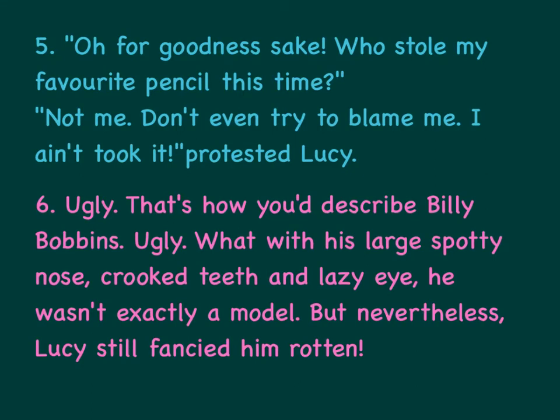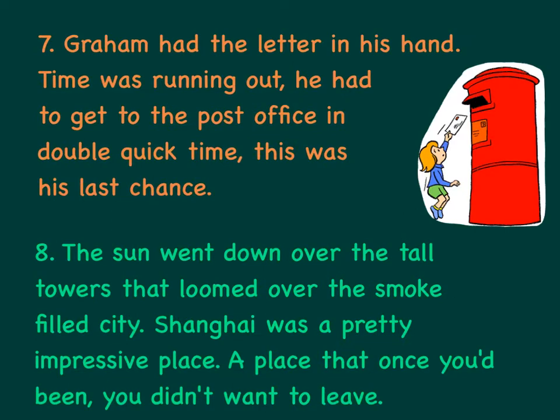Opening 6: Ugly. That's how you would describe Billy Bobbins. Ugly. What with his large spotty nose, crooked teeth and lazy eye. He wasn't exactly a model. But nevertheless, Lucy still fancied him rotten. Opening 7: Graham had the letter in his hand. Time was running out. He had to get to the post office in double quick time. This was his last chance.